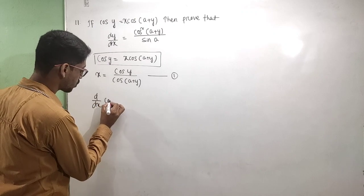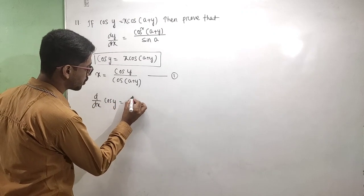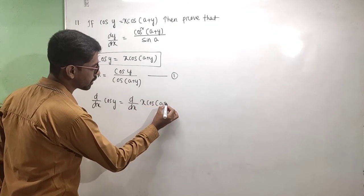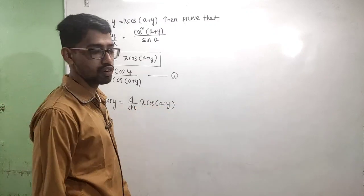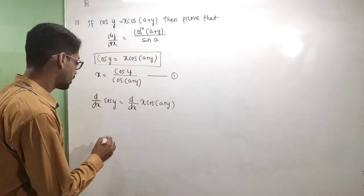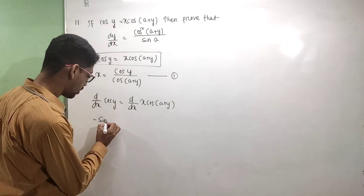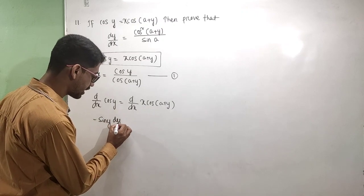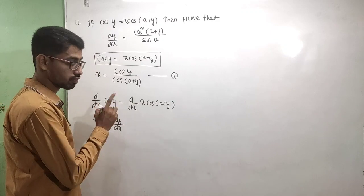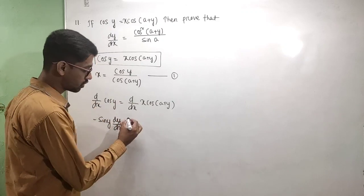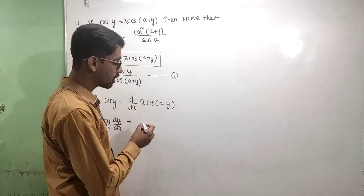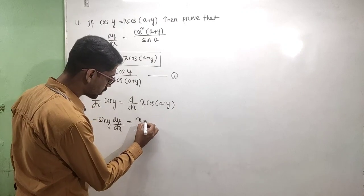Derivative of y is equal to derivative of x·cos(a + y). Differentiating both sides with respect to x: derivative of cos y gives minus sin y · dy/dx. With respect to x, y is a function, so we apply dy/dx. Next, derivative of x·cos(a + y) — apply the product rule.